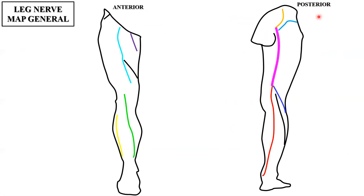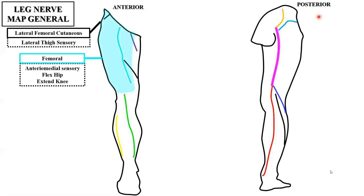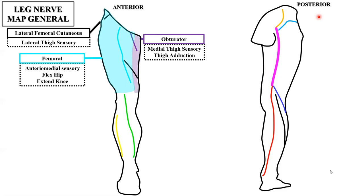Now for the leg nerve map general. As in the upper extremity, try to remember muscles as a group rather than individually — they're more digestible that way. First is the lateral femoral cutaneous: the word cutaneous means sensation only, no motor innervation. So the lateral part of the thigh sensory comes from the lateral femoral cutaneous. Next, the femoral nerve provides innervation to muscles that flex the hip and extend the knee, and also provides anterior medial sensory to the thigh. The obturator nerve gives medial thigh sensation and supplies the muscles that adduct, or bring, the thigh into the body.